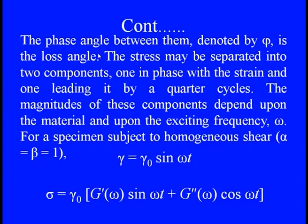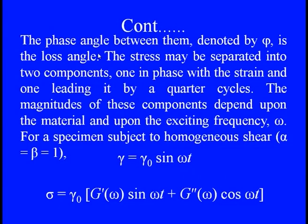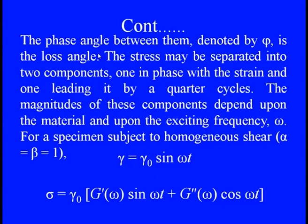The phase angle between them which is always there is a measure of this loss angle in some kind of viscoelastic material. Accordingly, the stress can be separated into two parts: one in which there is a phase with the stress-strain in the loading condition, and one when we have a different feature towards that in any of the quarters. The magnitude of these components is clearly depending upon the material and the exciting frequency ω. For a homogeneous shear, we can say that α and β, the damping and shear function, become the same - means one. We can say γ = γ_0 sin(ωt), and we can calculate the total stress σ = γ_0 [G'(ω) sin(ωt) + G''(ω) cos(ωt)]. G' is the storage modulus and G'' is the loss modulus in the shear feature, clearly showing the linear variation of the viscoelastic stress-strain.